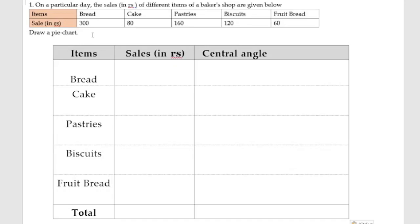For drawing a pie chart, first we will find out the angles. Let us take a table. In this table I have taken the items, next sales which is already given, and the central angle. First for bread, the sales in rupees is given as 300.